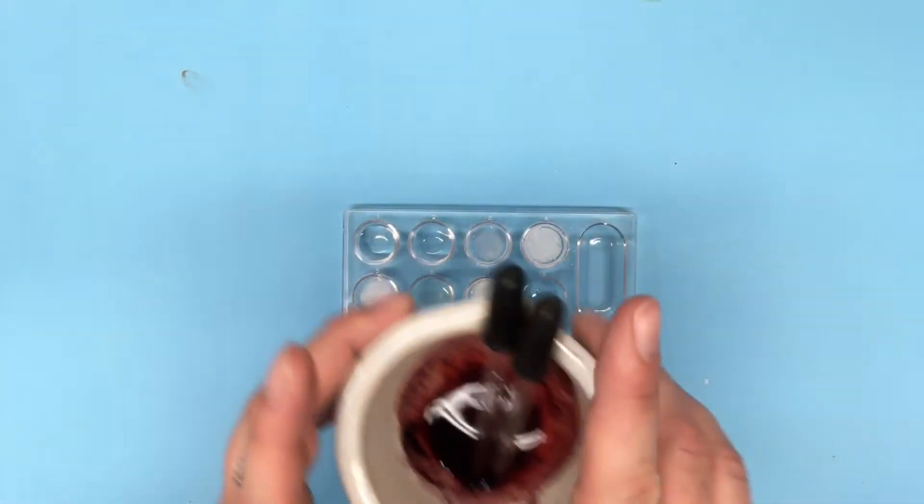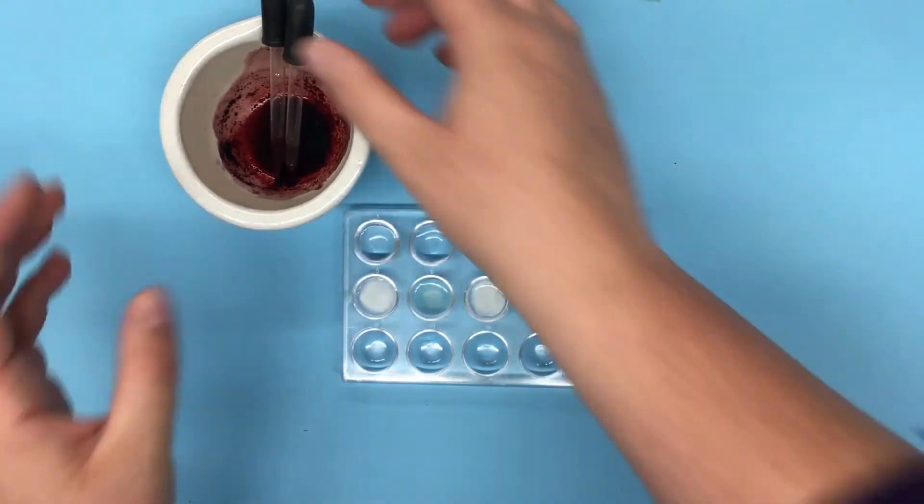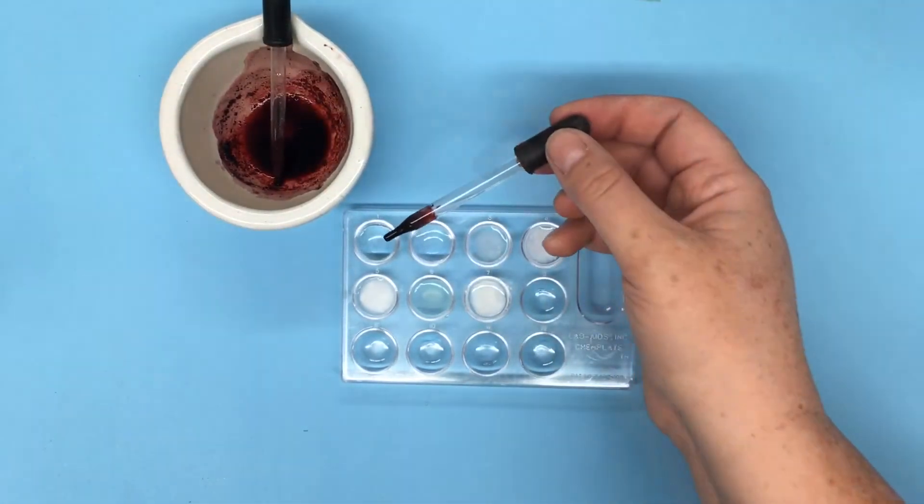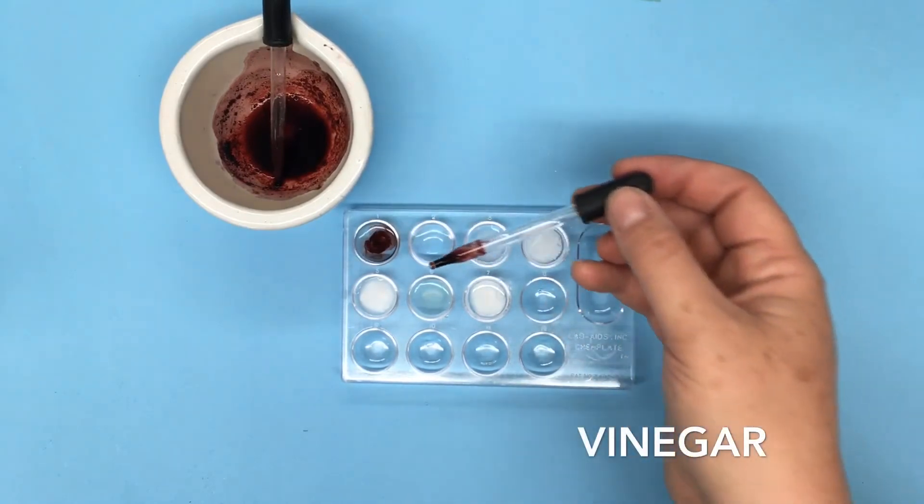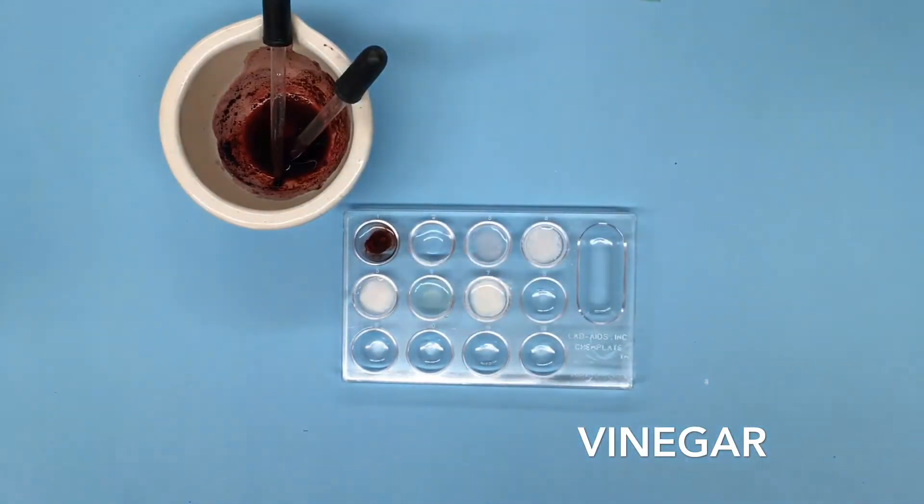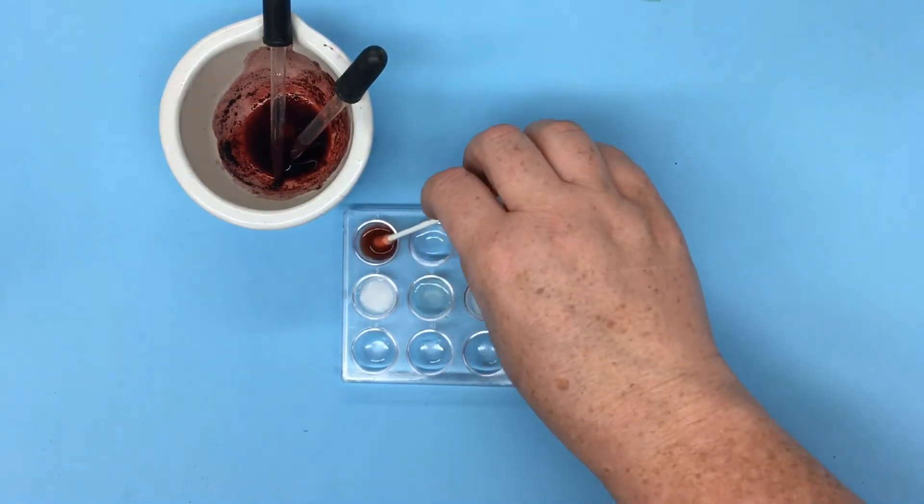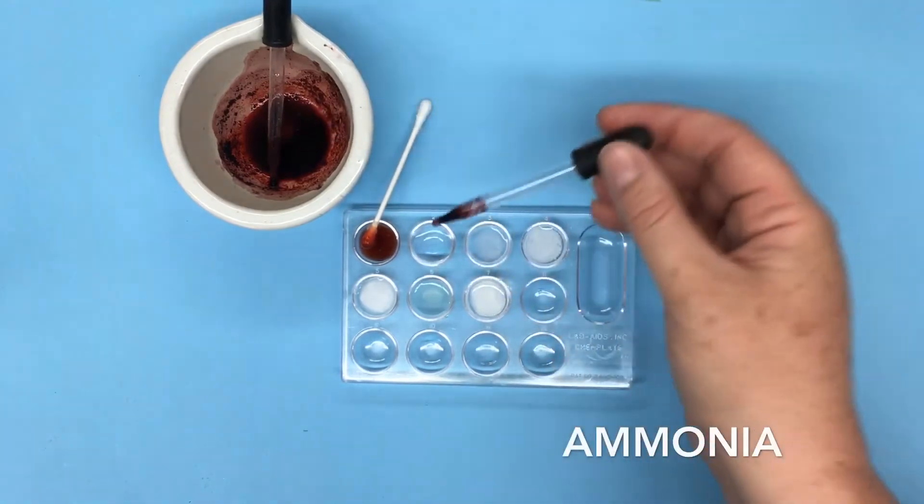So now let's bring our carminic acid back in. Remembering that it's a nice deep red color. First we'll put it into the vinegar and just give that a little bit of a stir. We can see a color change already. That one looks bright orange.